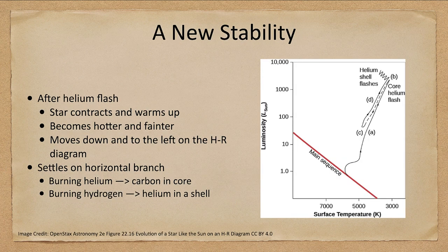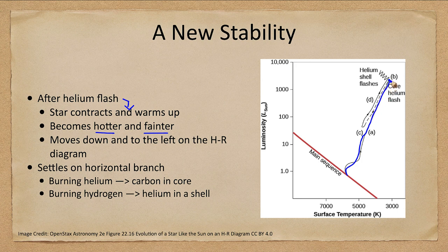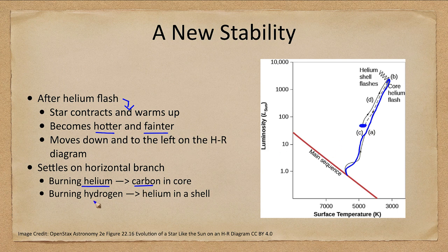After the helium flash, for a star like the Sun, the star contracts and warms up, becoming hotter and fainter. As it left the main sequence and went up the red giant branch, it was building up helium in the core — and at the peak that's where the helium flash occurs. The star then jumps down quickly to a lower level on the HR diagram, entering a new stability where it burns helium into carbon in the core and hydrogen into helium in a shell. This new stability can last hundreds of millions to a billion or more years.